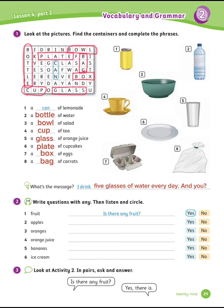Exercise number 2: Write your questions with 'any', then listen and circle. Let's write the question first. Number 1 is done for you: Is there any fruit?